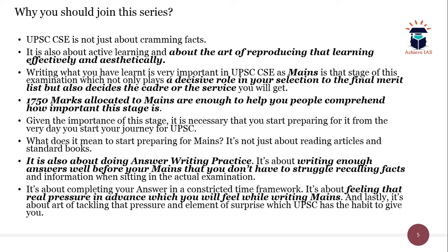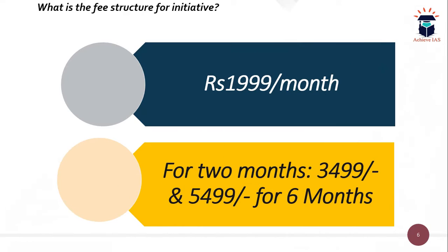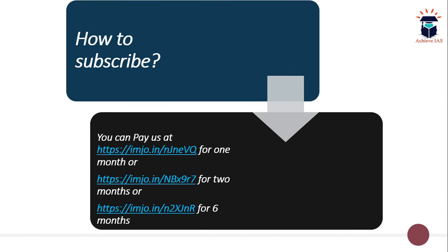If you are interested in joining this series, you can join — there will be a fee structure because we are putting in a lot of effort. The fee structure is ₹1,999 per month, or you can join for two months at ₹3,499, or for six months at ₹5,499. If you are interested, you can join us using the links shown on your screen, which will also be provided in the description box. Do ensure you check the description box and subscribe using those links.